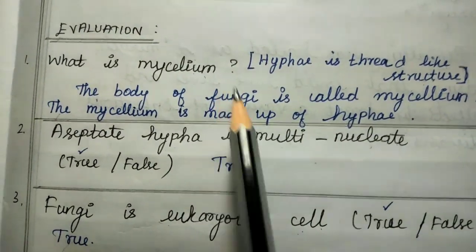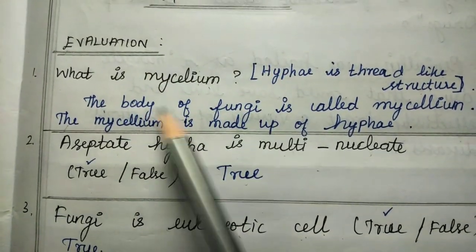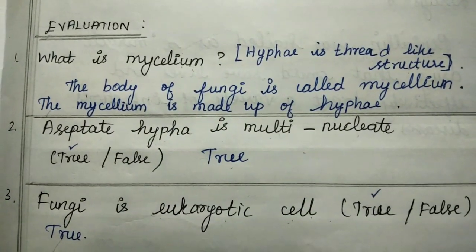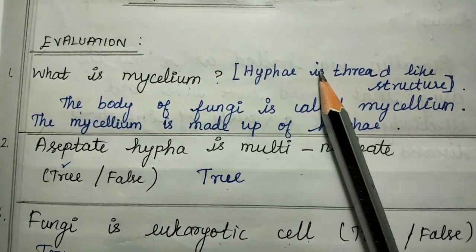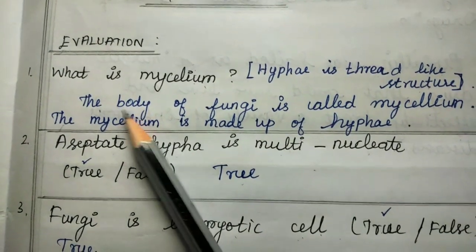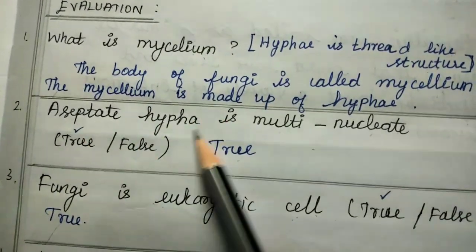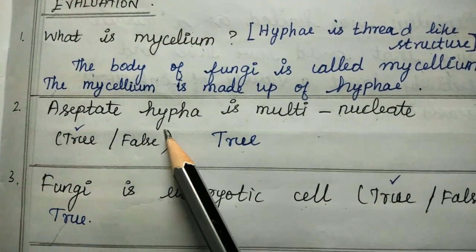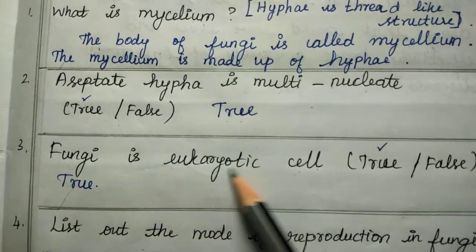The body of the fungi is called mycelium. Mycelium is made up of hyphae, which are thread-like structures. The hyphae are multinucleate. Fungi is a eukaryotic cell — this is true.